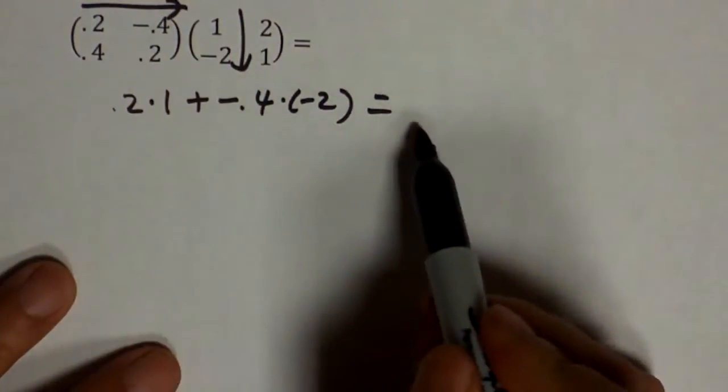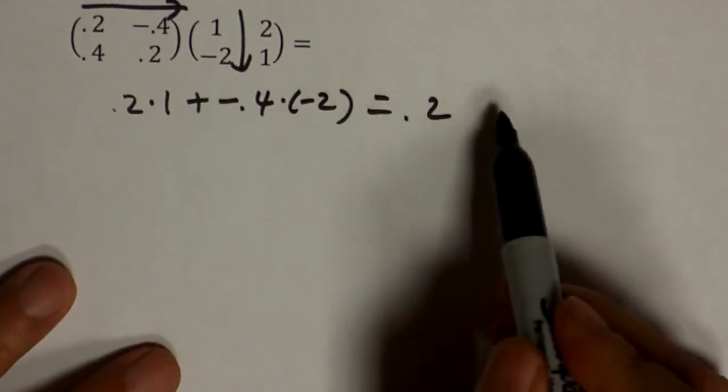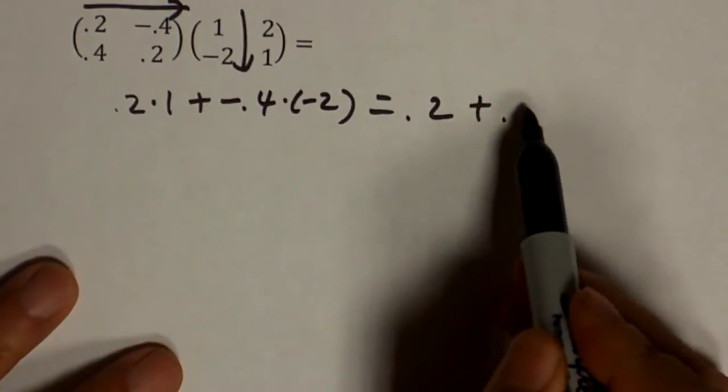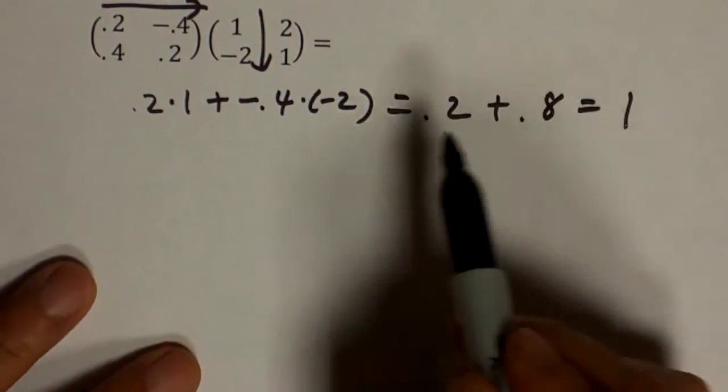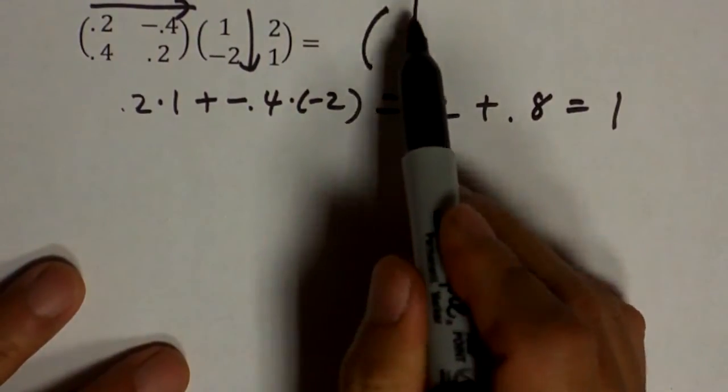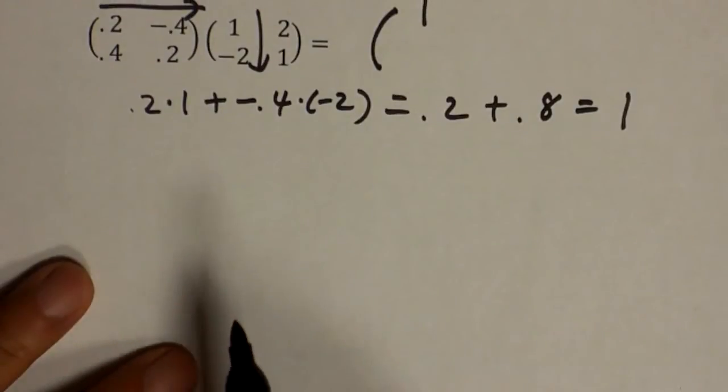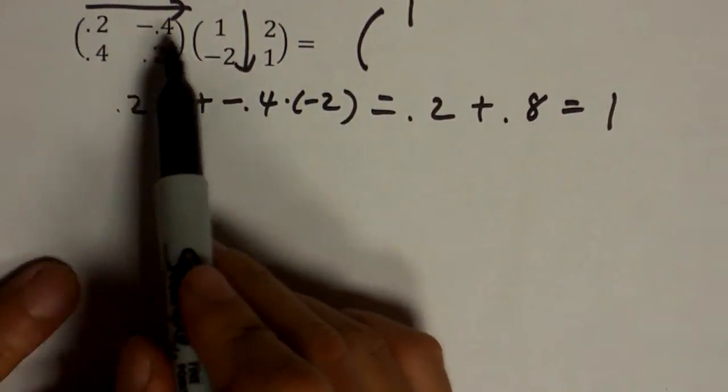What is this? This is point two. Negative negative becomes positive. Two times four is eight. So it's plus point eight. And that will give you one. So the first result you get is one.